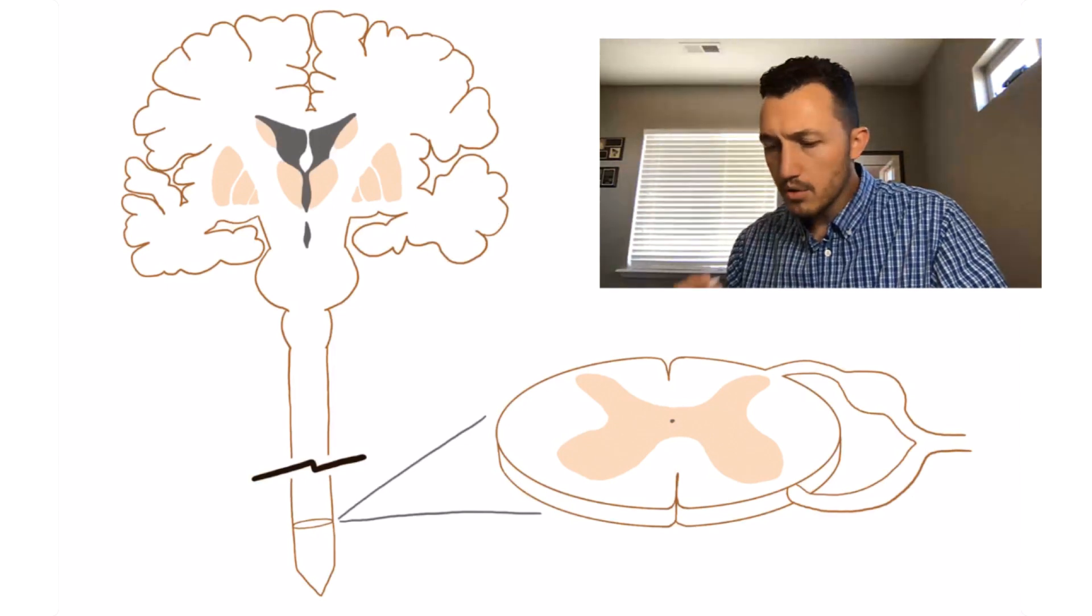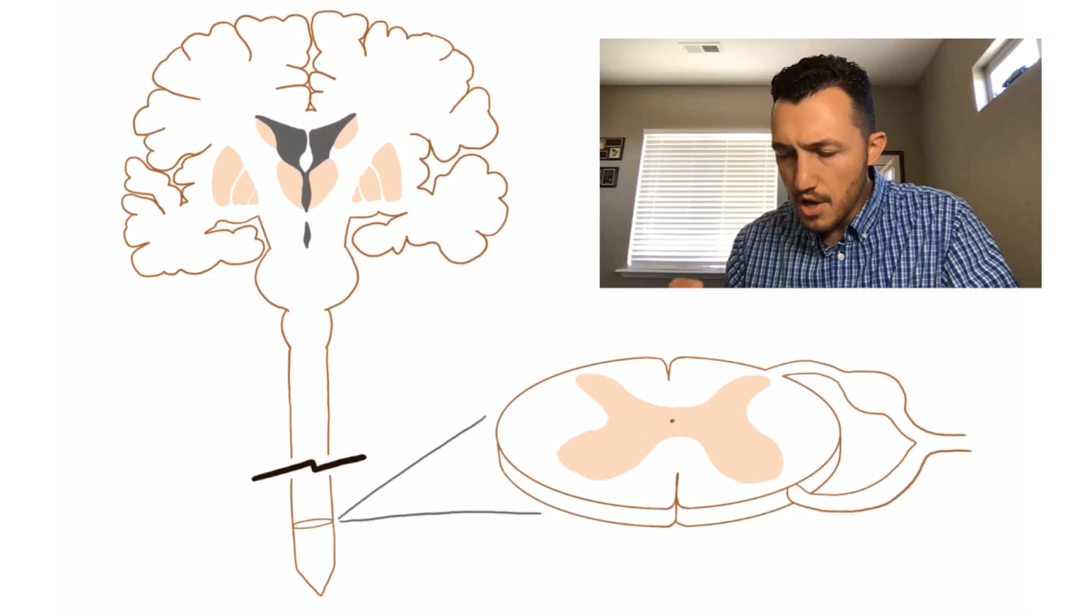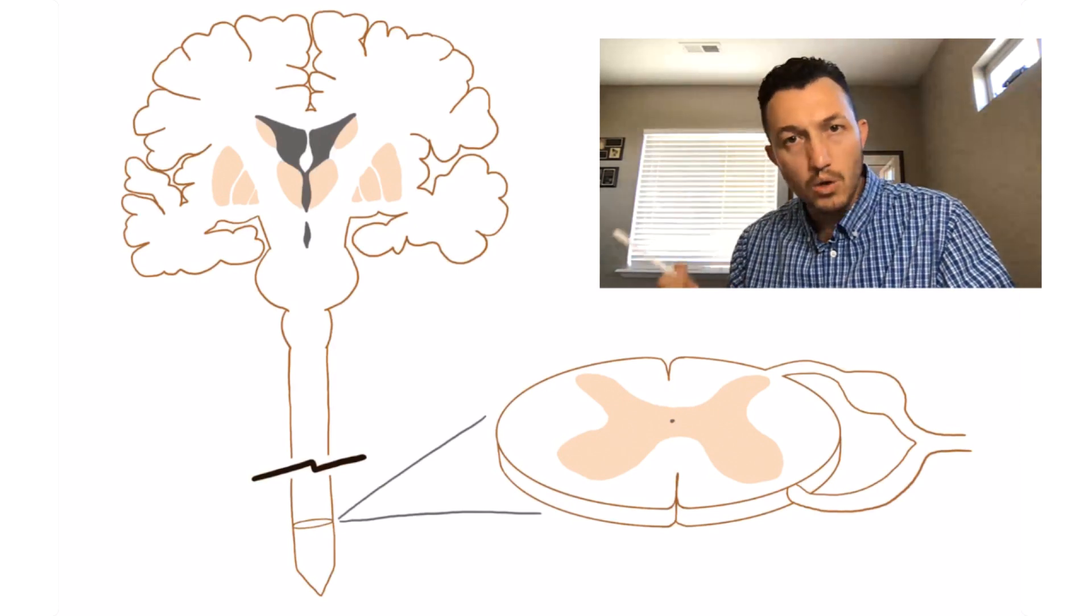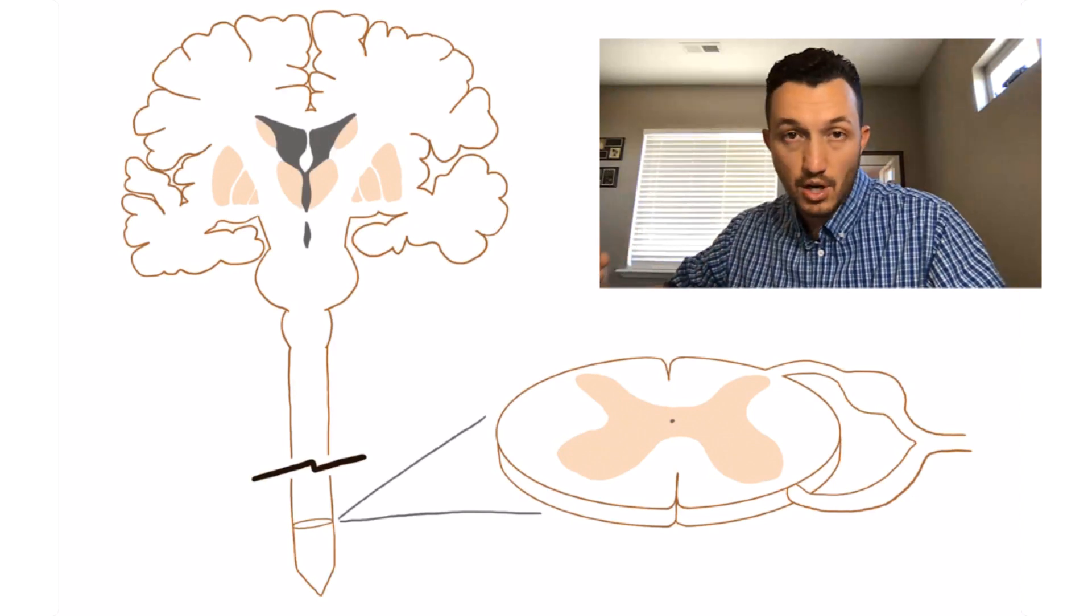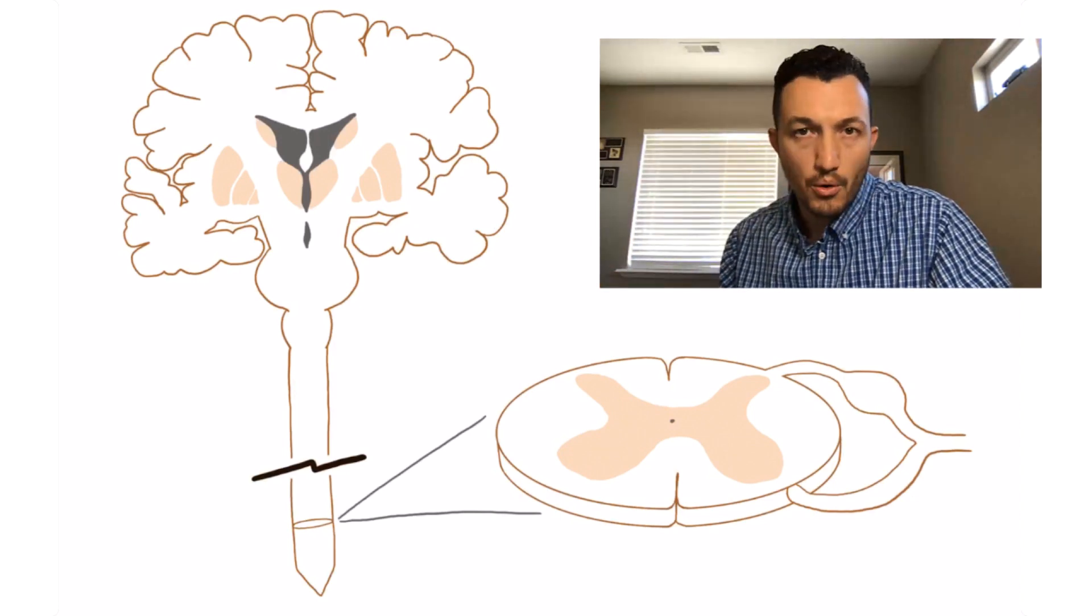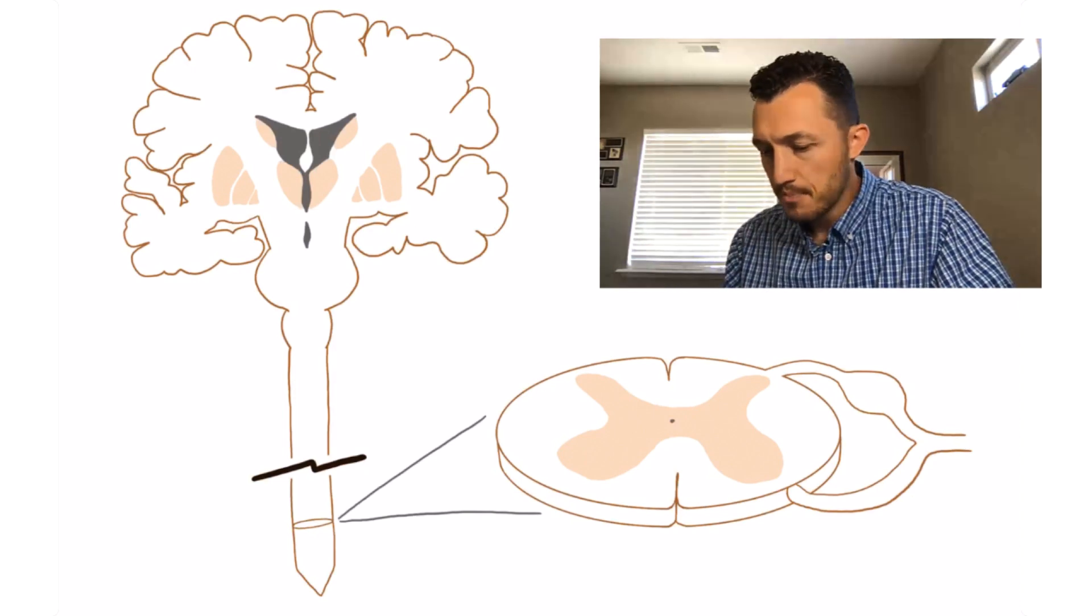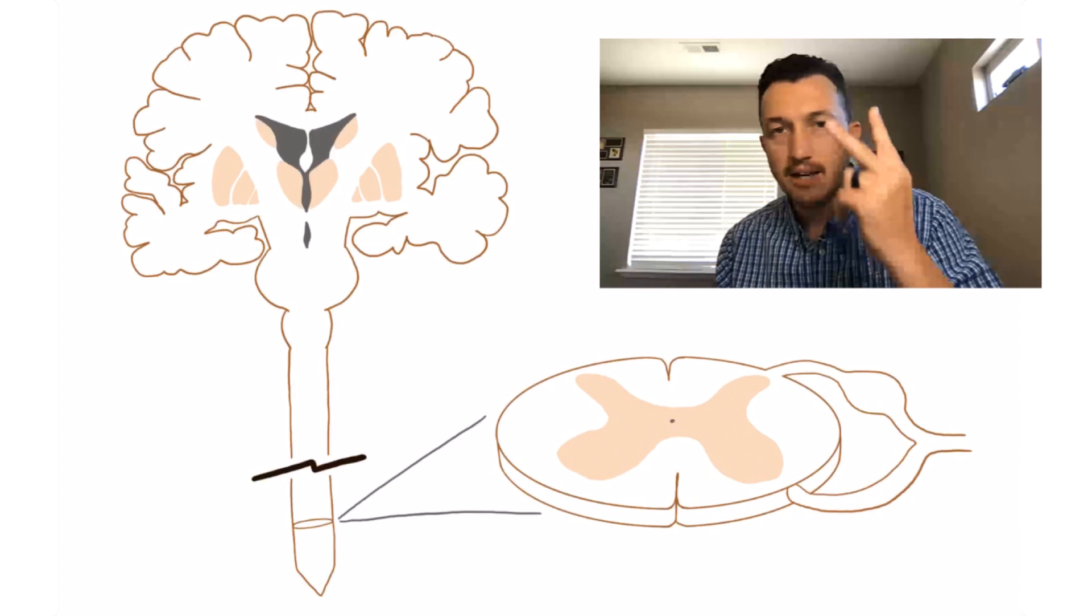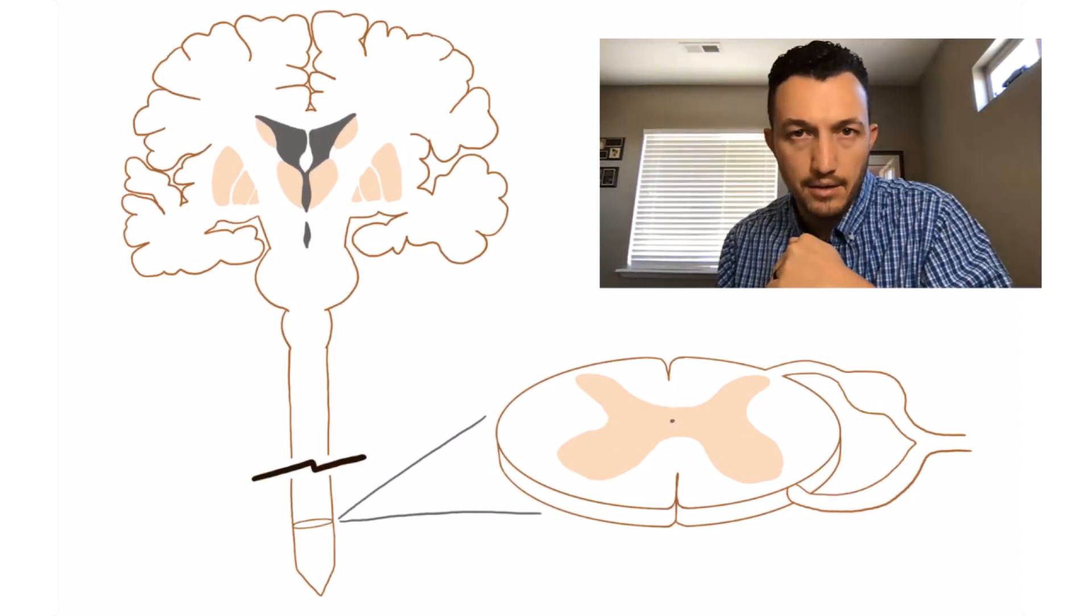So for the corticospinal tract, the upper motor neuron and lower motor neuron carry the signal from the central nervous system where it starts up in the primary motor cortex down to the motor end plate where the lower motor neuron synapses on the muscle itself. And so the corticospinal tract then is made of two neurons. So it's two neurons in length.